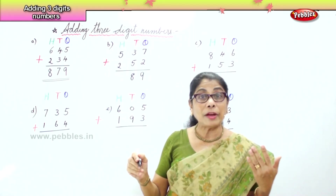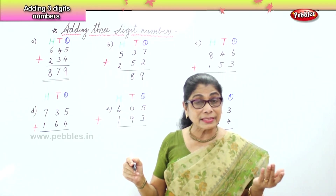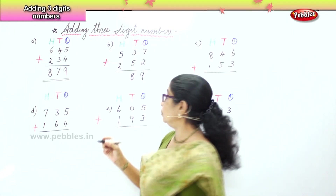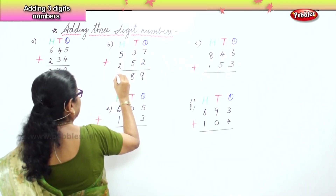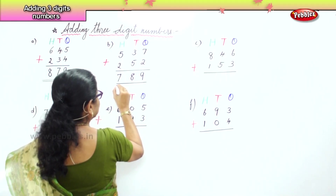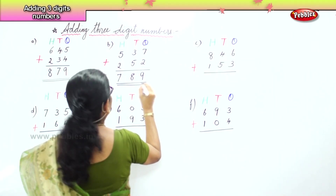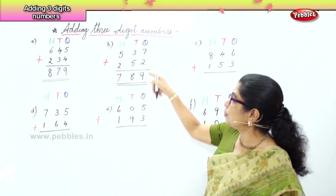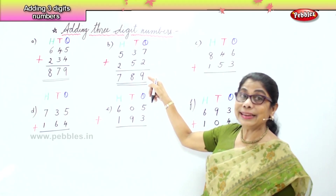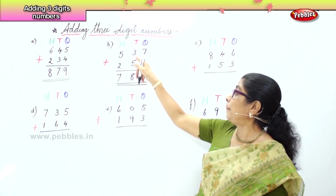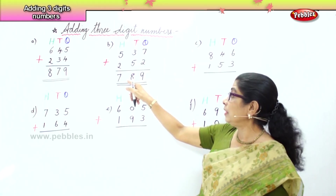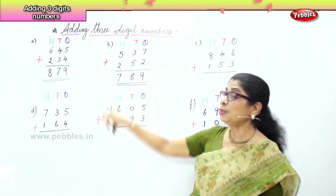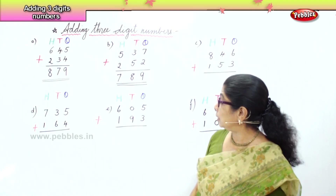Now we go to the hundreds. We have five hundreds and two hundreds. What is five plus two? Seven. So: seven ones and two ones is nine ones, three tens plus five tens is eight tens, five hundreds plus two hundreds is seven hundreds. The answer is seven hundred and eighty-nine.